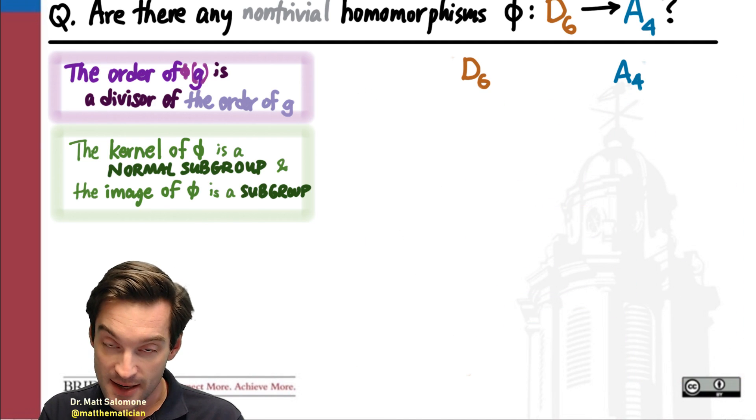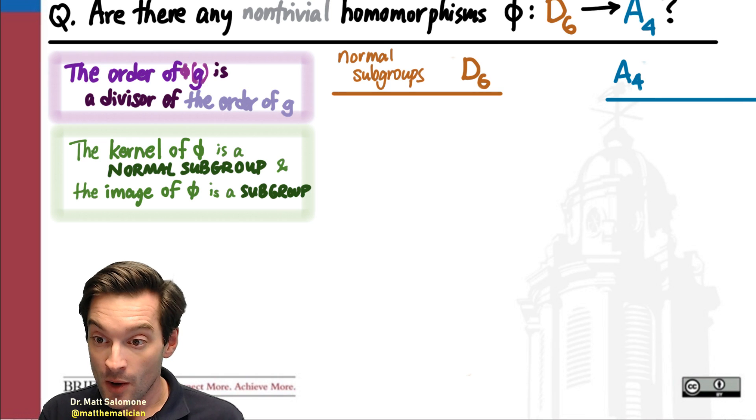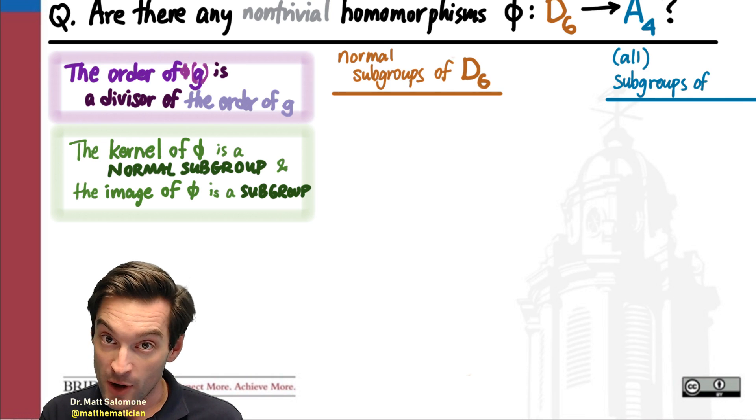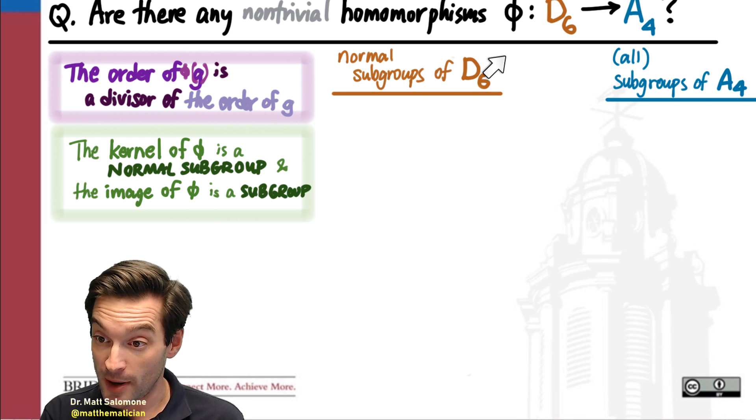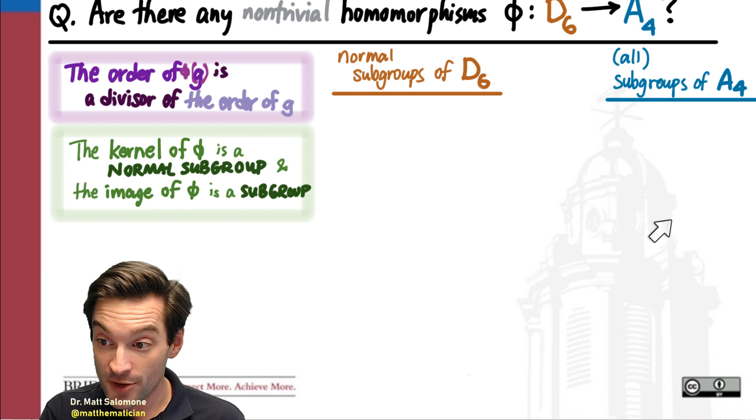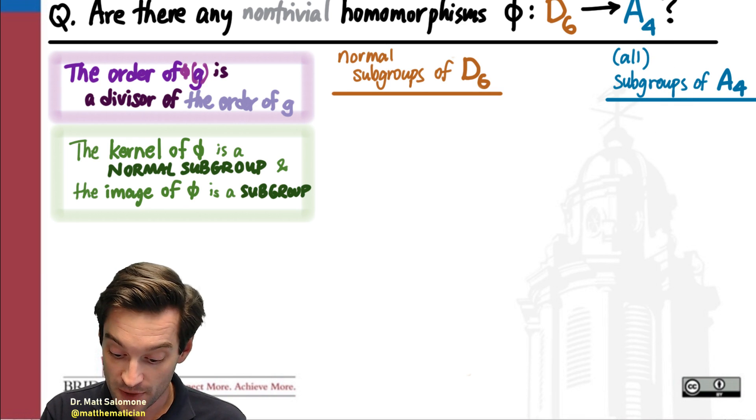So rather than listing out the individual elements and their orders, why don't we instead make what we hope is a shorter list, which is a list of all the normal subgroups of the domain. These are going to be every possible kernel for my homomorphism. And a list of all the subgroups of the target group. This is going to be the list of all possible images for my homomorphism.